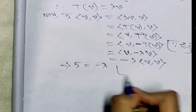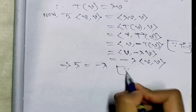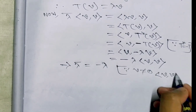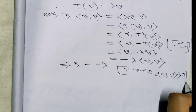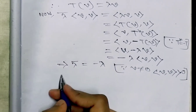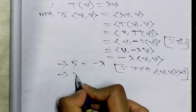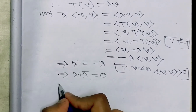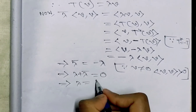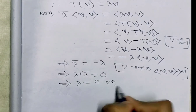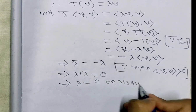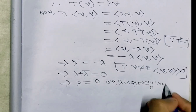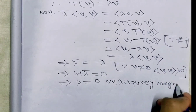Lambda-bar equals minus lambda, and since v is not equal to 0, <v,v> is always greater than 0. This implies lambda plus lambda-bar equals 0, so lambda has to be 0 or lambda is purely imaginary.